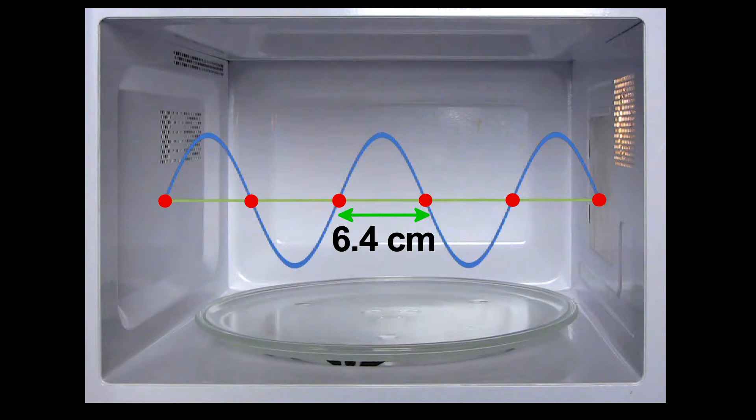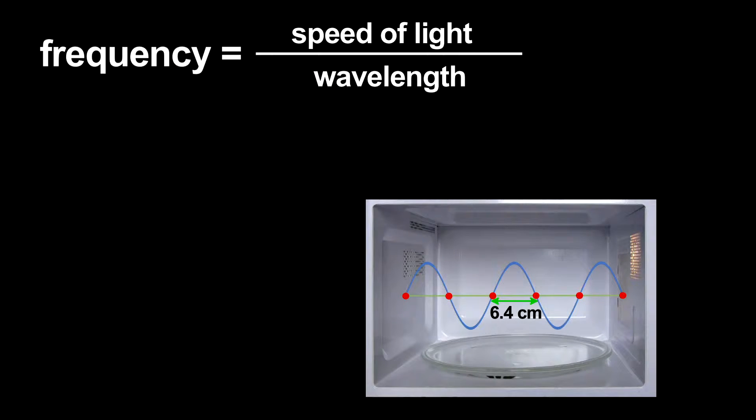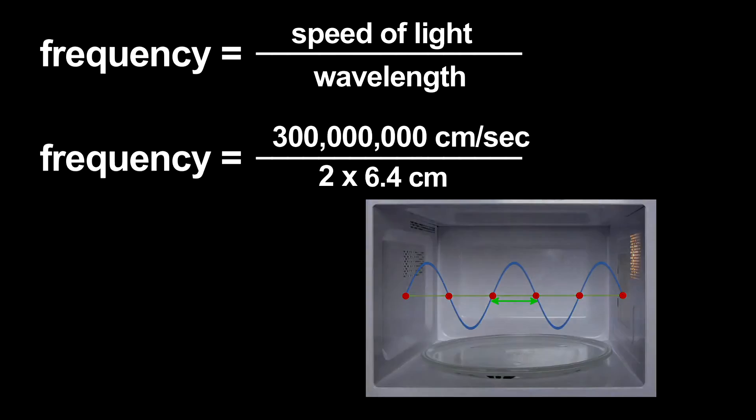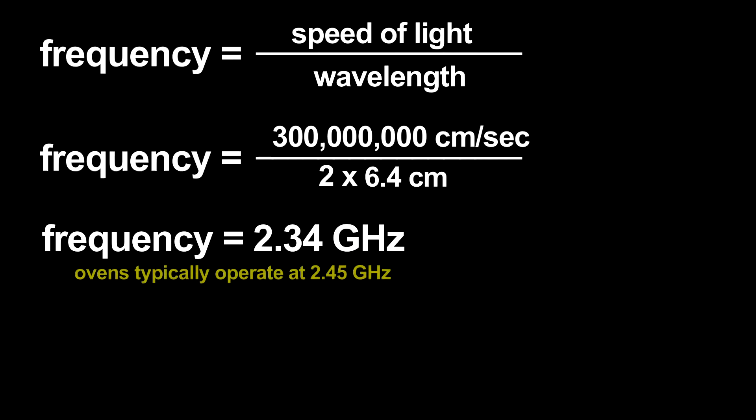Using that wavelength, I can estimate the microwave radiation's frequency. The frequency is related to the wavelength by the speed of light. I get an answer that only has a 4 or 5 percent error. Not bad for this primitive measurement.